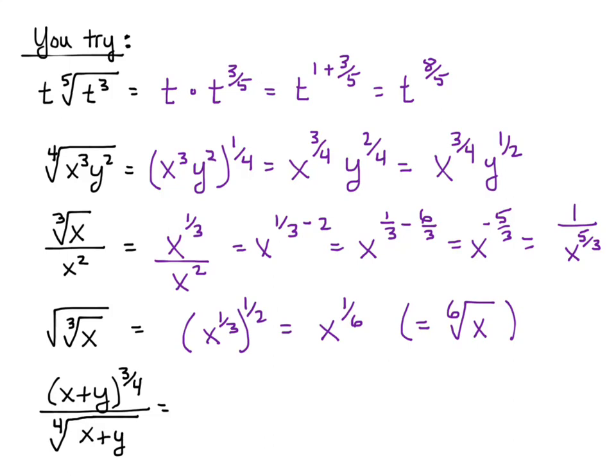Oftentimes these things look a lot more complicated than they really are once you start manipulating and simplifying the exponents. Now this last one looks kind of messy, and one thing you have to avoid when dealing with exponents like this is being tempted to say it's going to be x to the three-fourths plus y to the three-fourths. That just doesn't work. If it was (x+y) squared, you'd have that middle 2xy term — you can't distribute the three-fourths like you would if x and y were multiplied.